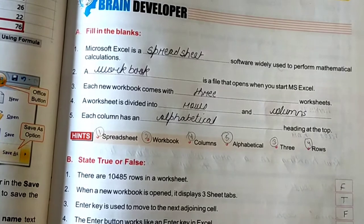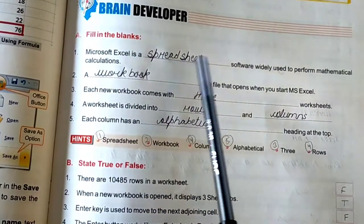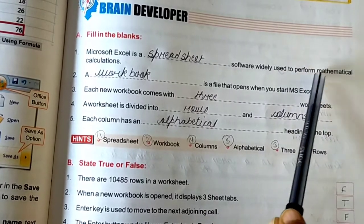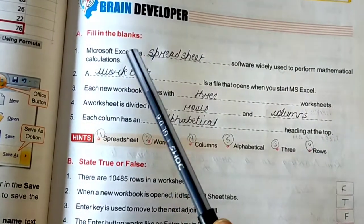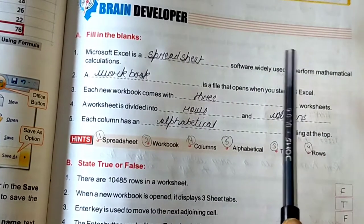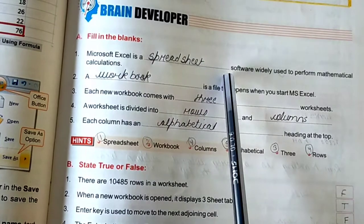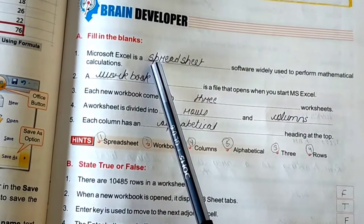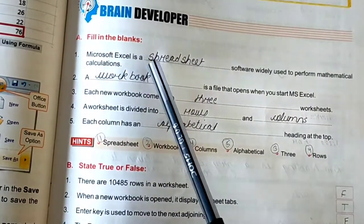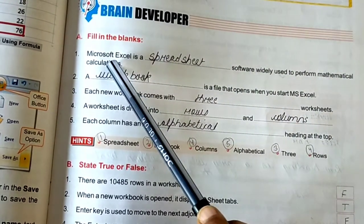Fill in the blanks. Number 1, Microsoft Excel is a blank software widely used to perform mathematical calculations. Microsoft Excel is a spreadsheet software widely used to perform mathematical calculations.